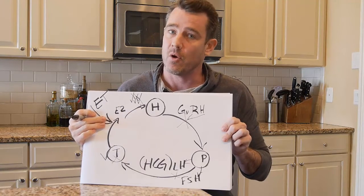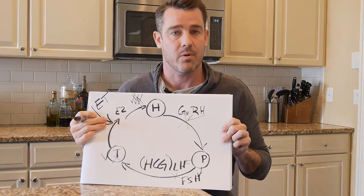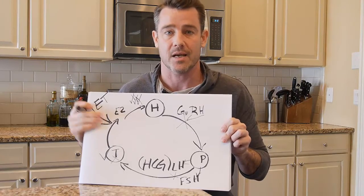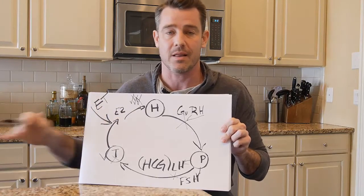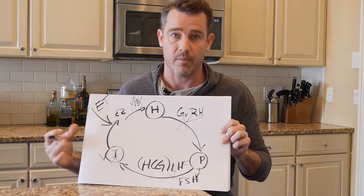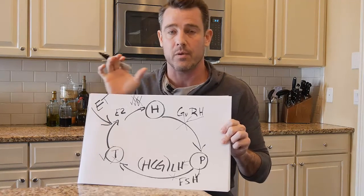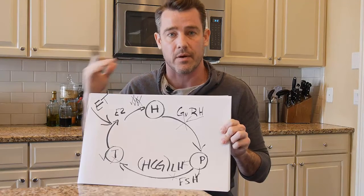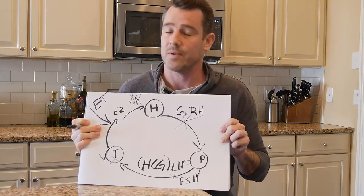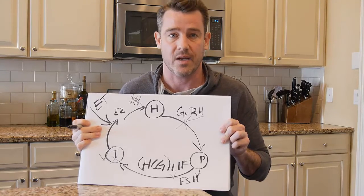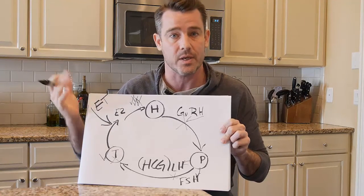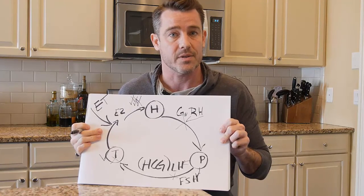The problem with Clomid, though, is it raises something called sex hormone binding globulin, which will drastically decrease your free testosterone. This is why we only use Clomid for men who are family planning, and only short-term during the cycle they're actually trying to conceive. Outside of that, we take them off the Clomid and try to rectify their sex hormone binding globulin levels, which in turn increases free testosterone significantly.